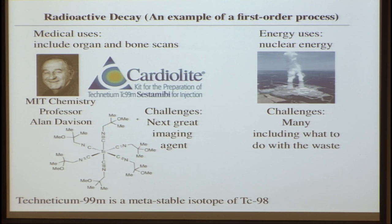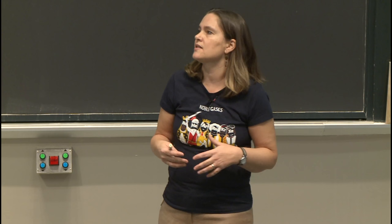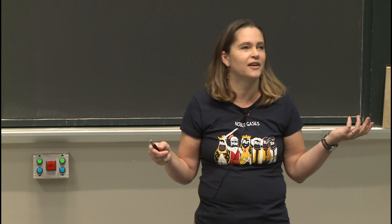Cardiolite is used about 7 million times a year to image various organs, and has been for a very long time. It's off patent now, but this patent made Alan Davison, MIT, and the MIT chemistry department an enormous amount of money. You could go talk to him about it, except he's happily retired living in one of his homes.